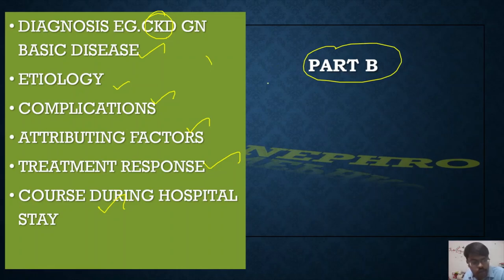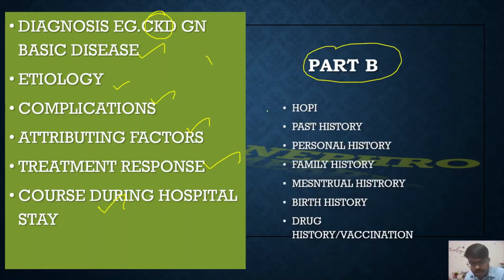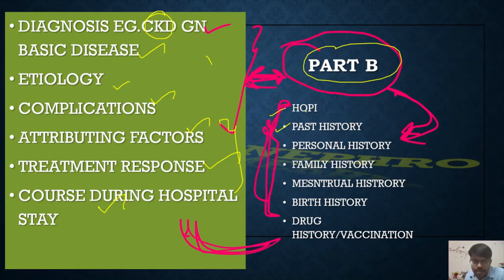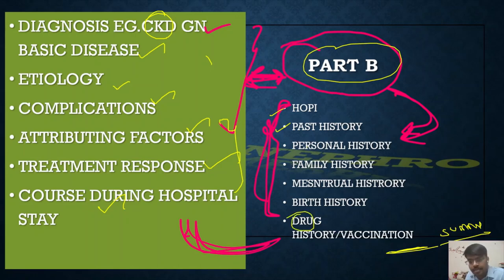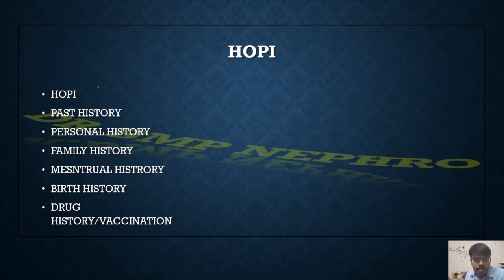Part B can be organized under the headings: history of presenting illness, past history, and personal history. There is always a query about where to mention the course during hospital stay — it is not important which heading it falls under; what matters is that these points are addressed. You can include drug history, vaccination history, and history of testing under appropriate headings. The information must be available by the end of Part B.